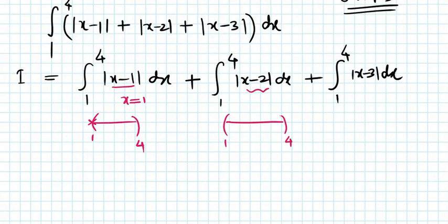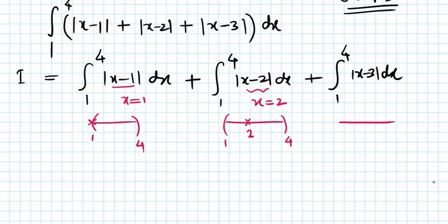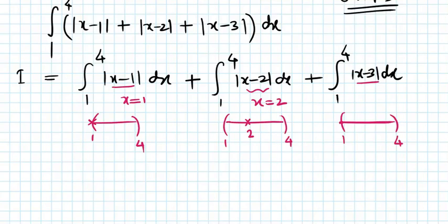The critical value of |x minus 2| is x equals 2, which is lying in between the limits. The lower limit is 1 and the upper limit is 4, so we need to calculate this integral over the interval from 1 to 4. Similarly, putting x minus 3 equal to 0 gives critical value x equals 3, which is also lying in between the limits.